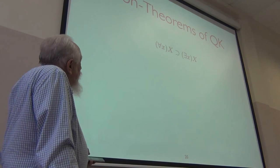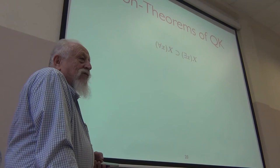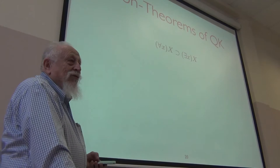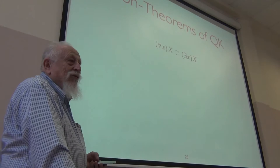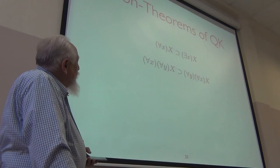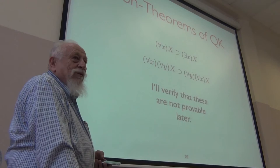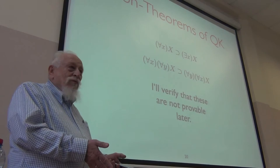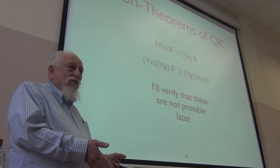Non-theorems: for-all x implies exists x is a non-theorem. You should expect it to be a non-theorem because in K you don't have box implies diamond. Quantifiers don't commute — that's a little curious. To show something is provable, you give a proof; to show something is not provable, you provide a semantics and find a model where it fails. We're going to need a semantics.